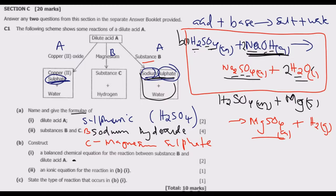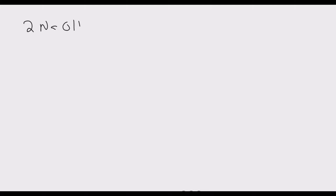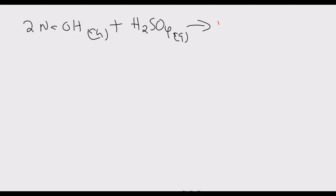Question B(ii) asks us to construct an ionic equation for the reaction in B(i). To derive the ionic equation from the balanced equation, the first step is to ensure the equation is balanced. Our balanced equation is: 2NaOH (aq) + H₂SO₄ (aq) → Na₂SO₄ (aq) + 2H₂O (l). Before reducing to an ionic equation it must be balanced — that is the first step.